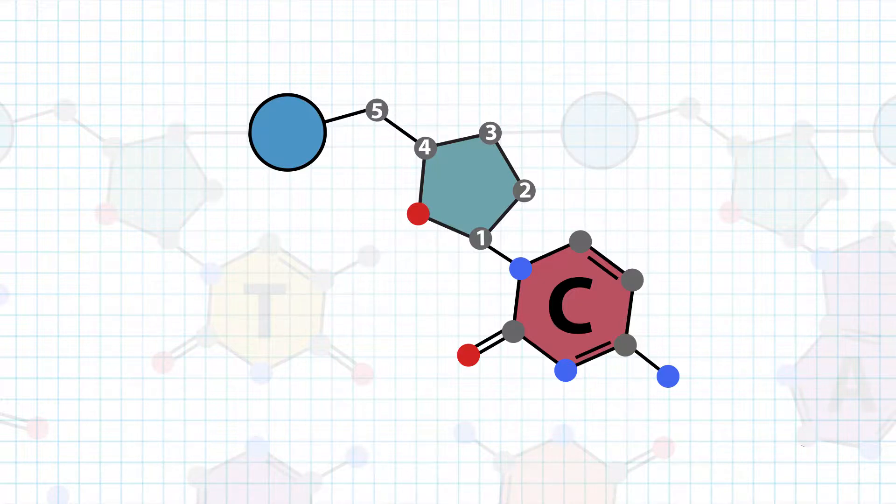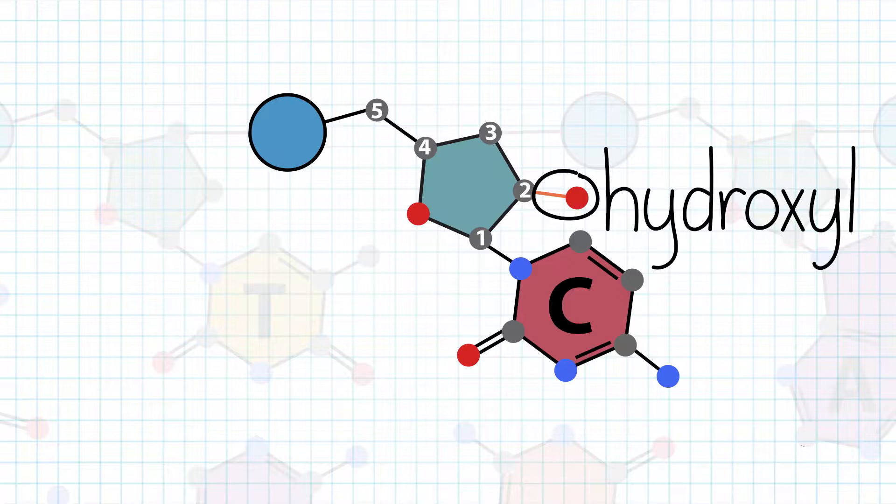The sugar is called deoxyribose because it is missing a hydroxyl group at the 2' carbon, which is present in ribose. Because of this, nucleotides in DNA, deoxyribonucleic acid, are called deoxynucleotides.